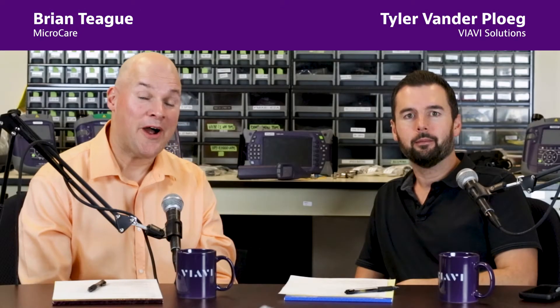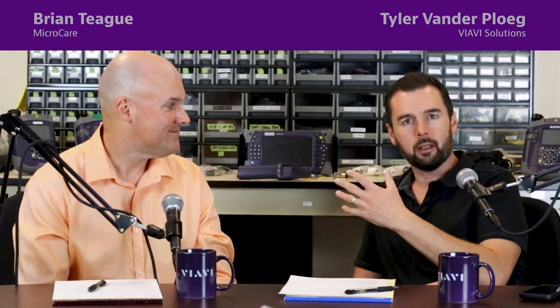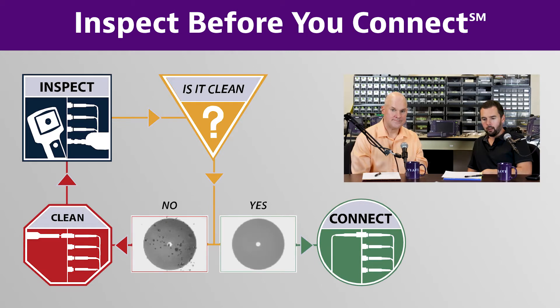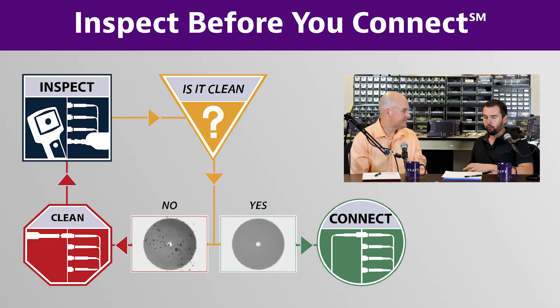Hey everybody, I'm Tyler and I'm Brian. We've been talking a lot about the inspection process — inspect before you connect. One of the biggest mistakes people make is they think of inspection and cleaning as a troubleshooting thing. They run an OTDR trace, find a problem, say it's a dirty connector, and then go to try to clean it. At that point, the dirt is not coming off because they didn't do it proactively.